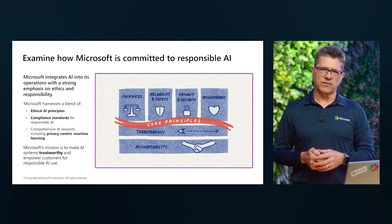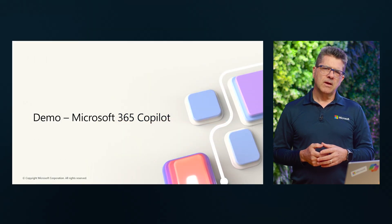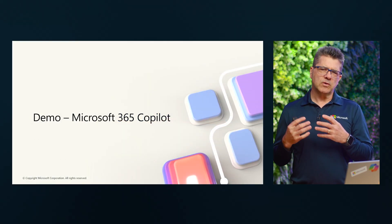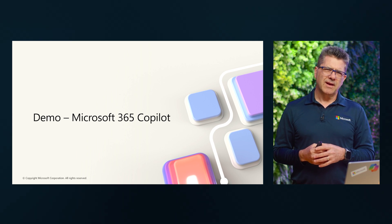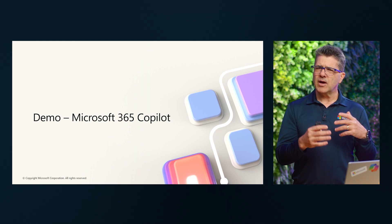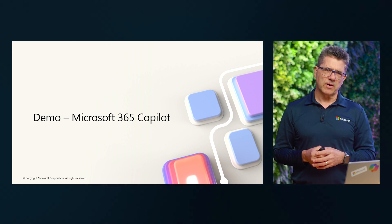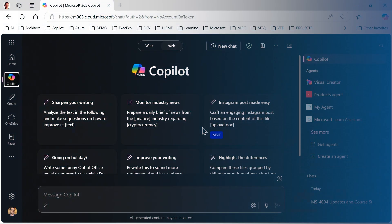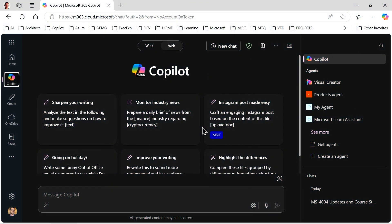Now let's look at a quick demonstration of Microsoft 365 Copilot — where we access it across applications and a quick example of using prompts. We're going to start with Copilot chat. You can access it by going to m365.cloud.microsoft.com. Here is an example of how to get there and access Copilot.